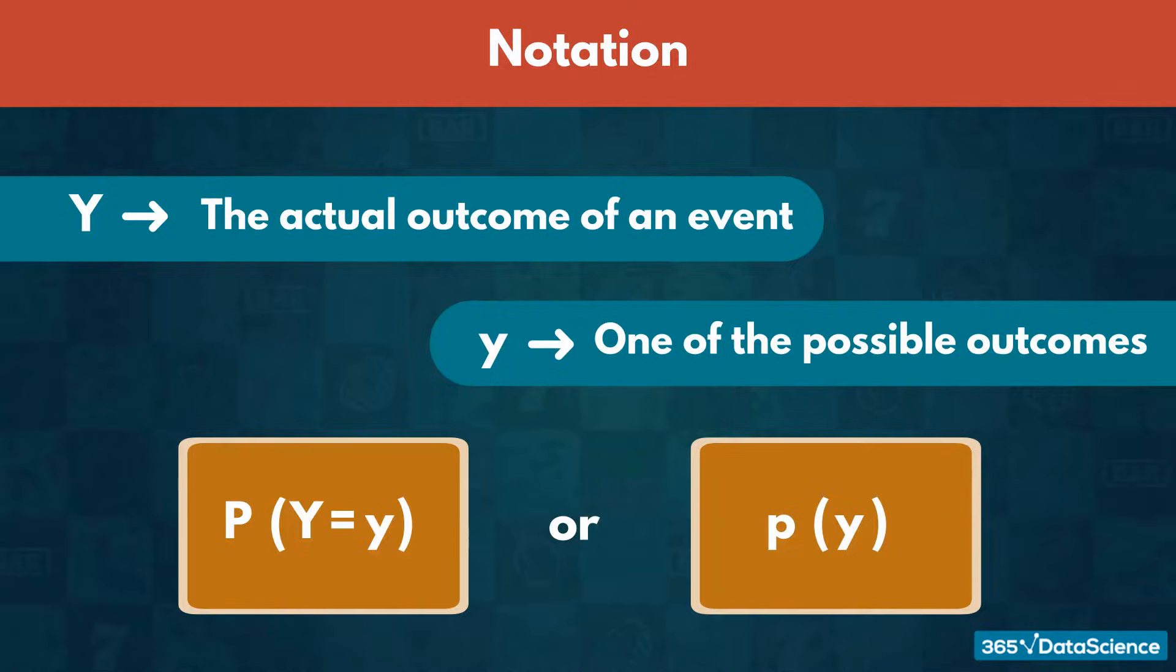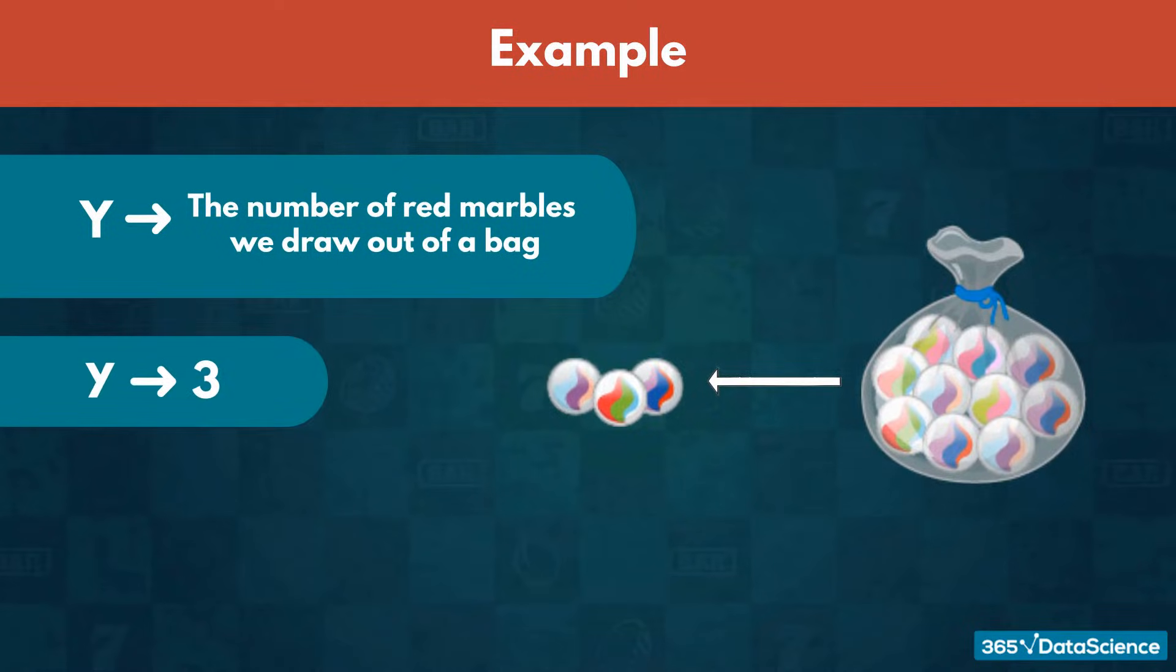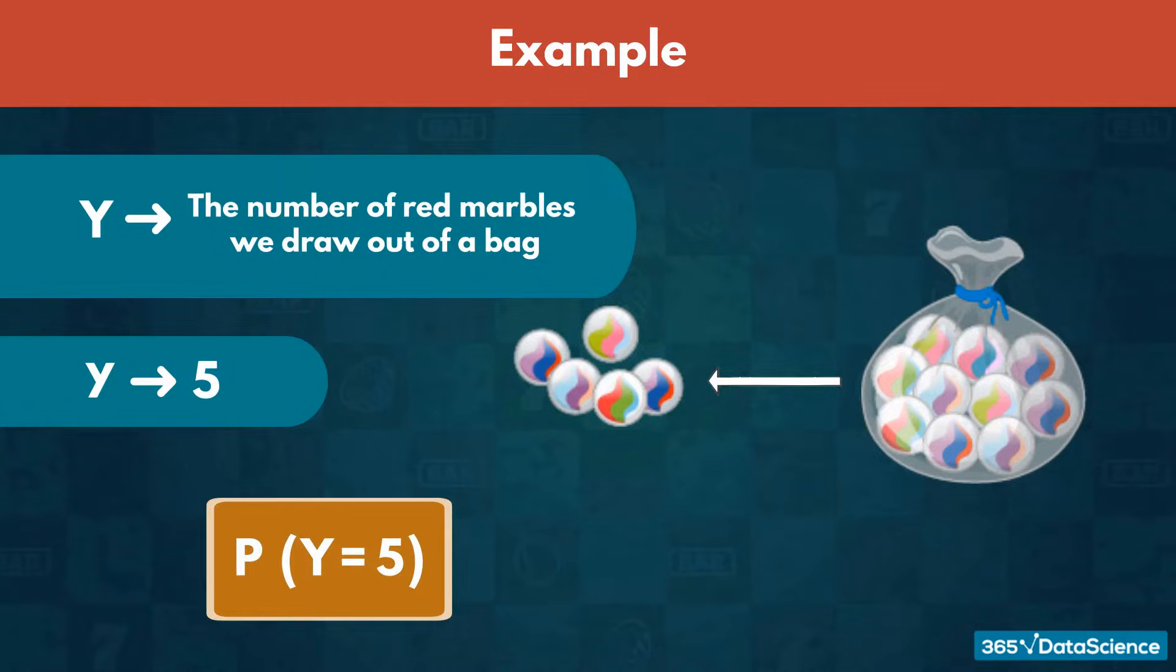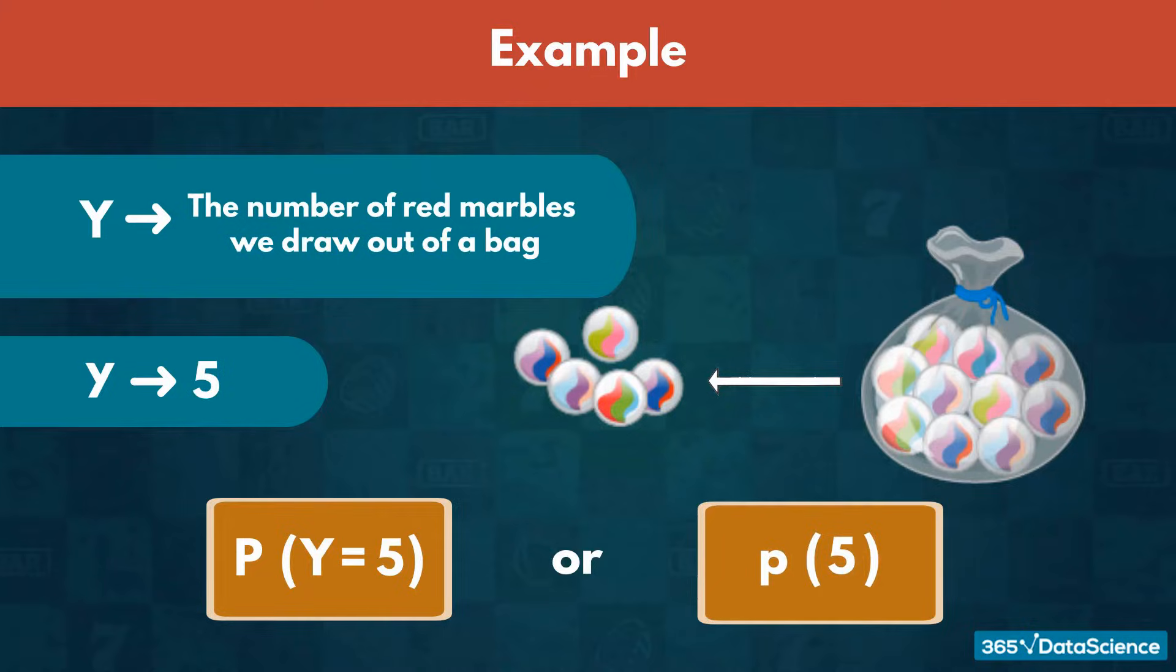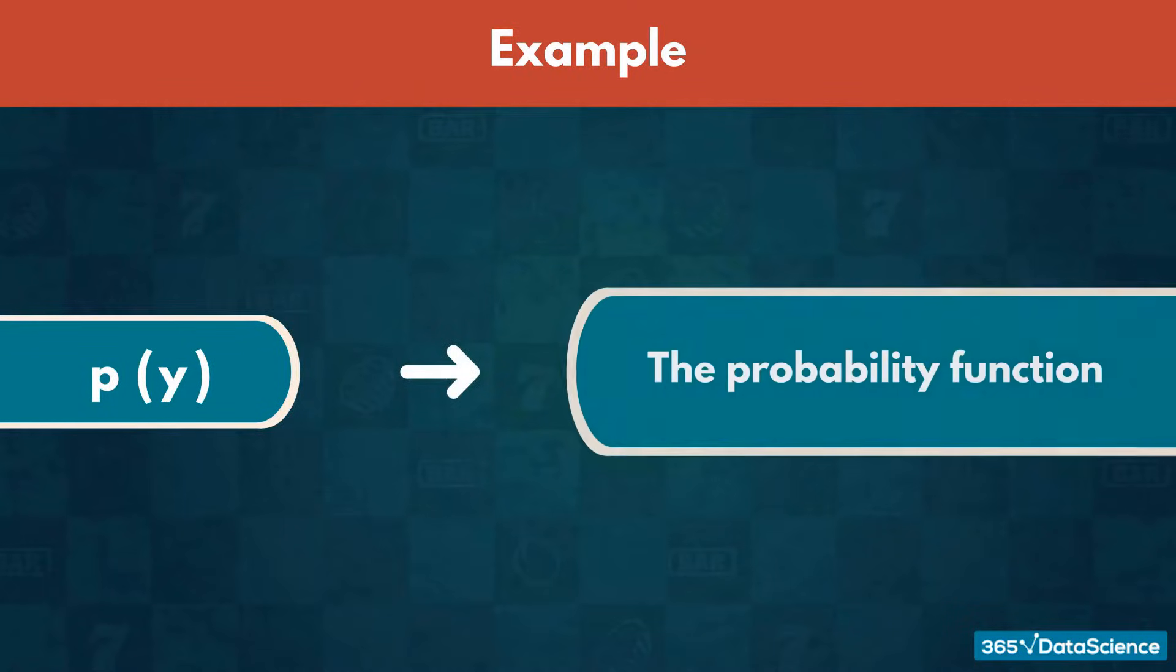For example, uppercase Y could represent the number of red marbles we draw out of a bag, and lowercase y would be a specific number, like 3 or 5. Then we express the probability of getting exactly 5 red marbles as P of Y equals 5, or P of 5. Since P of Y expresses the probability for each distinct outcome, we call this the probability function.